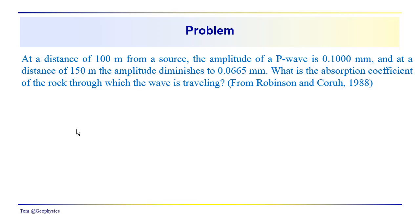You were left with a problem to solve. How did you do? At a distance of 100 meters from the source, the amplitude of a P wave is 0.1 millimeters, and at a distance of 150 meters, another additional 50 meters, the amplitude diminishes to 0.0665 millimeters. What is the absorption coefficient of the rock through which the wave was traveling? And again, note this comes from a textbook by Robinson and Karu back in 1988.